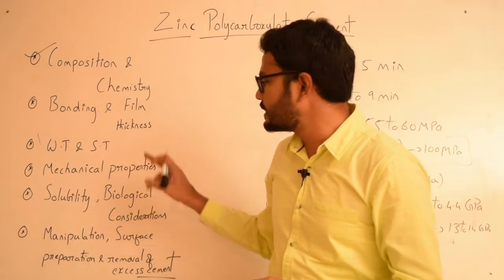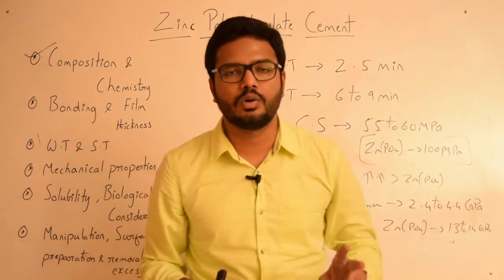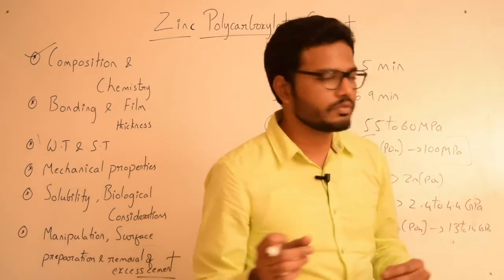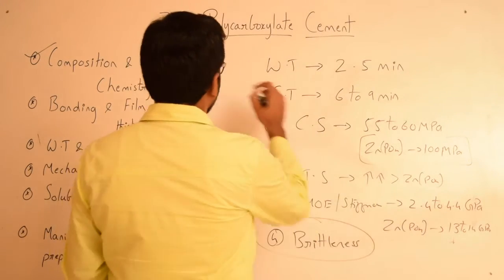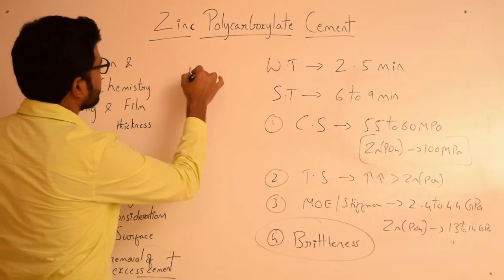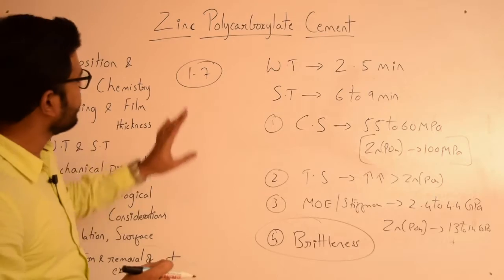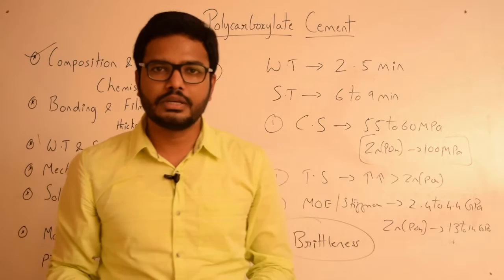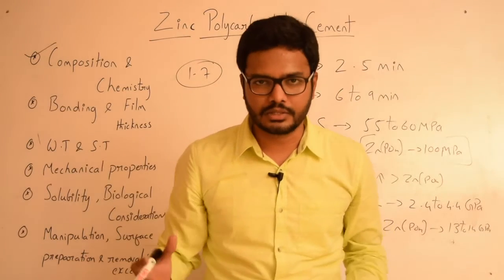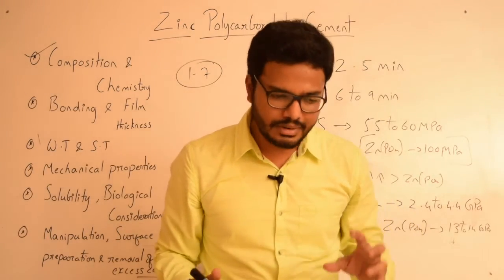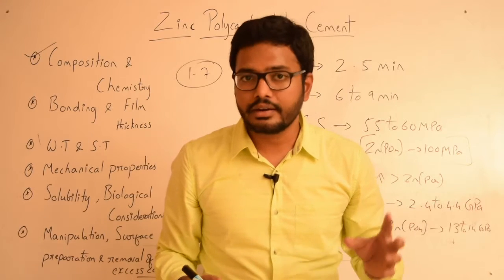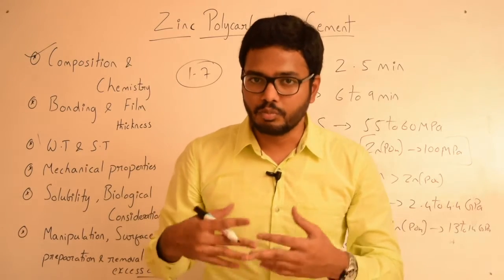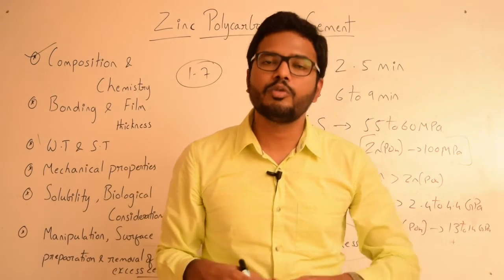Regarding biological considerations, there are two important points. First, the pH of the polyacrylic acid liquid is approximately 1.7. However, once this liquid is mixed with the powder, since it's an acid-based reaction leading to salt formation, there is a rapid rise in pH. So even though the initial pH is very low, it is not irritating to the pulp.